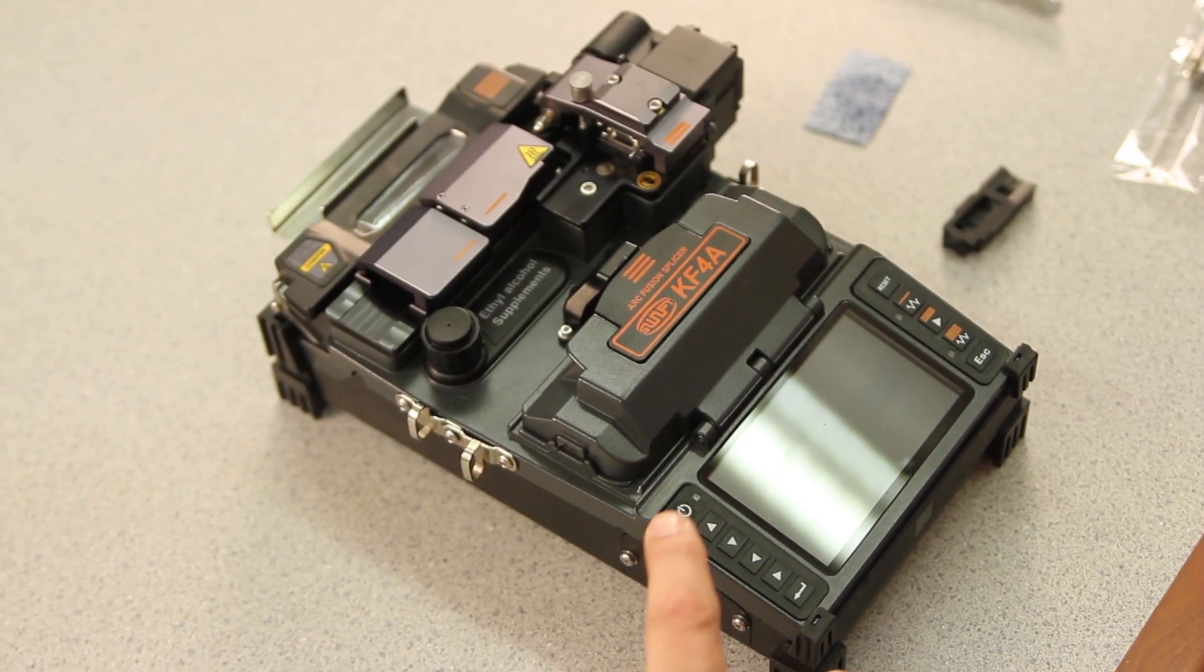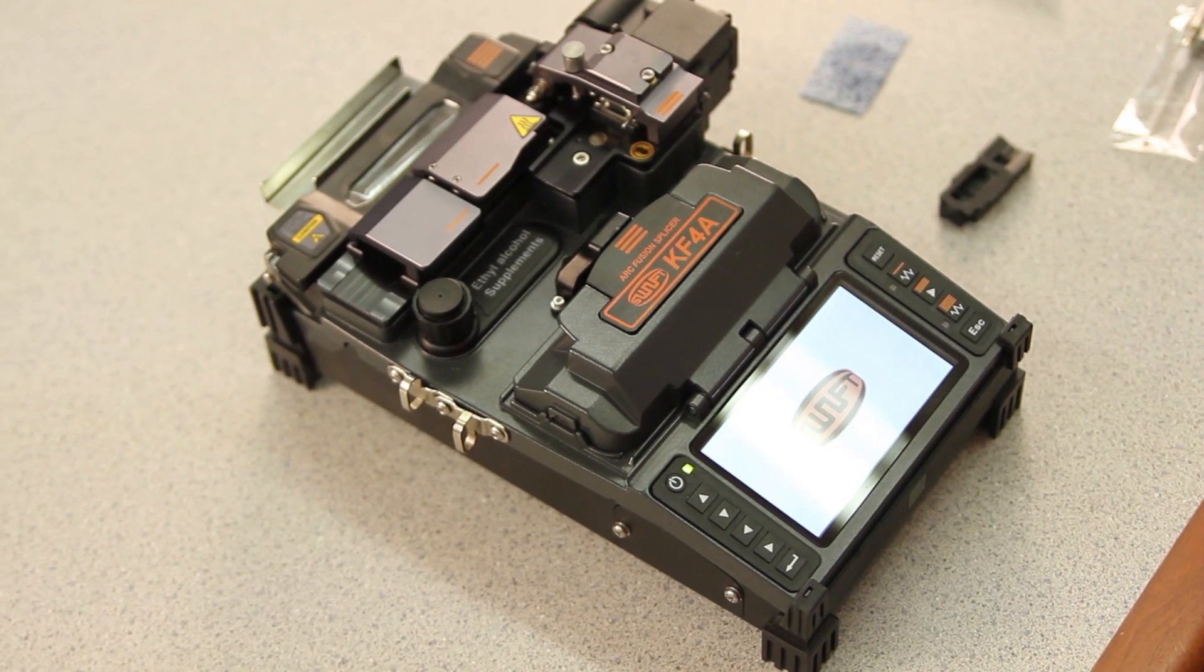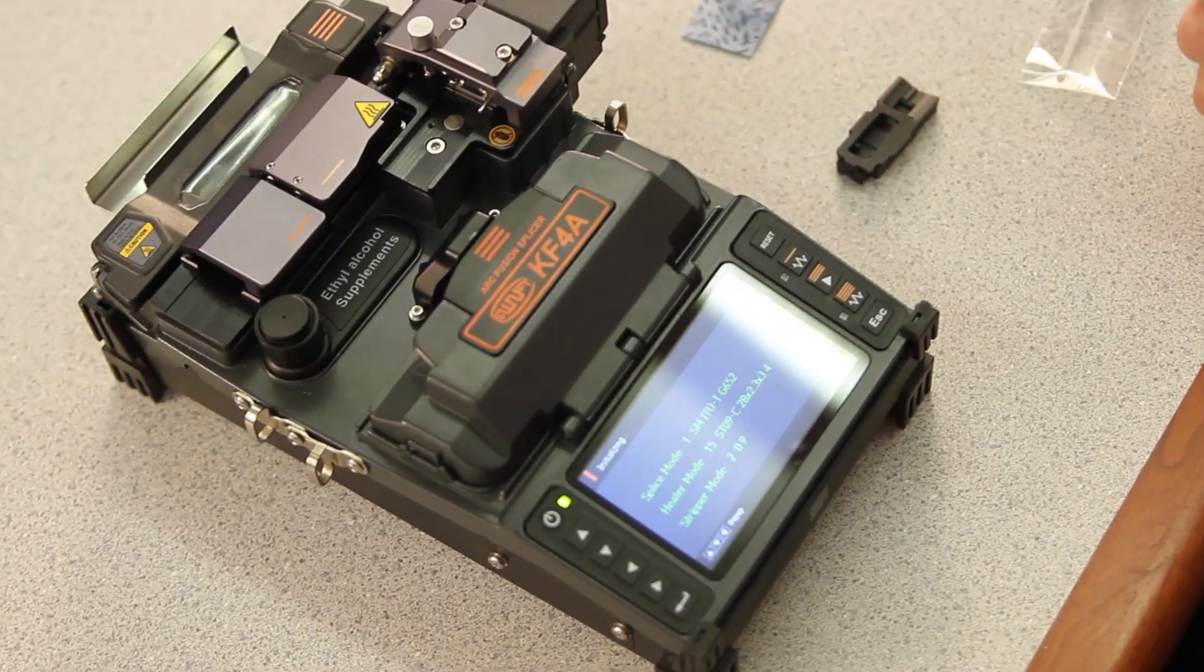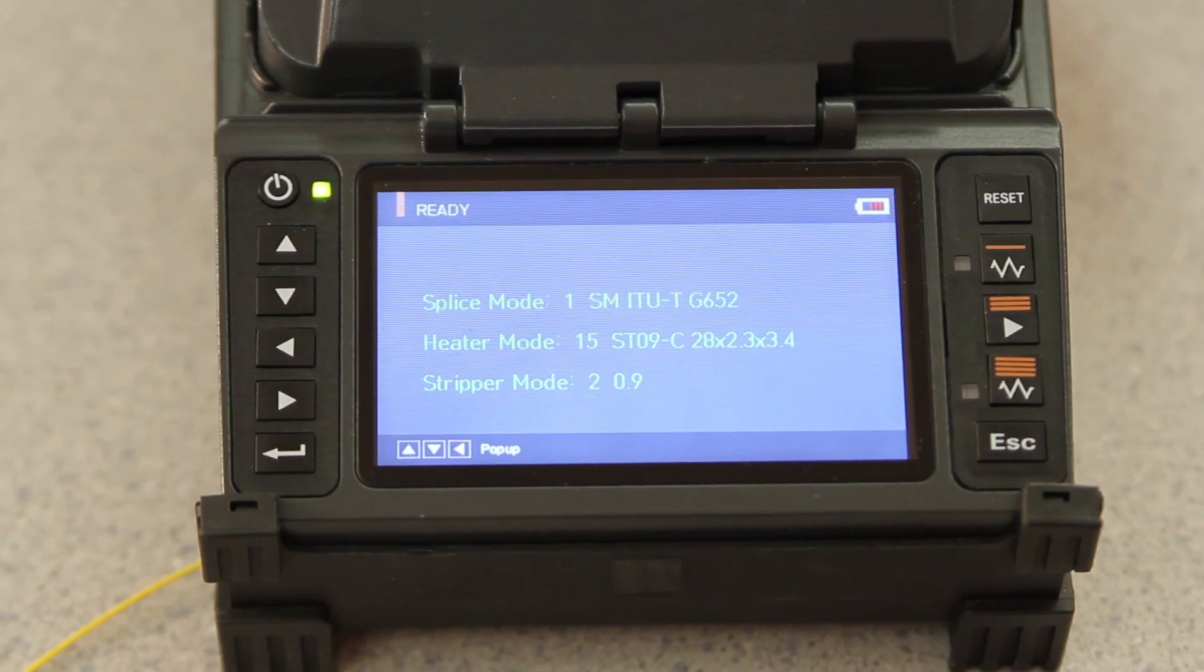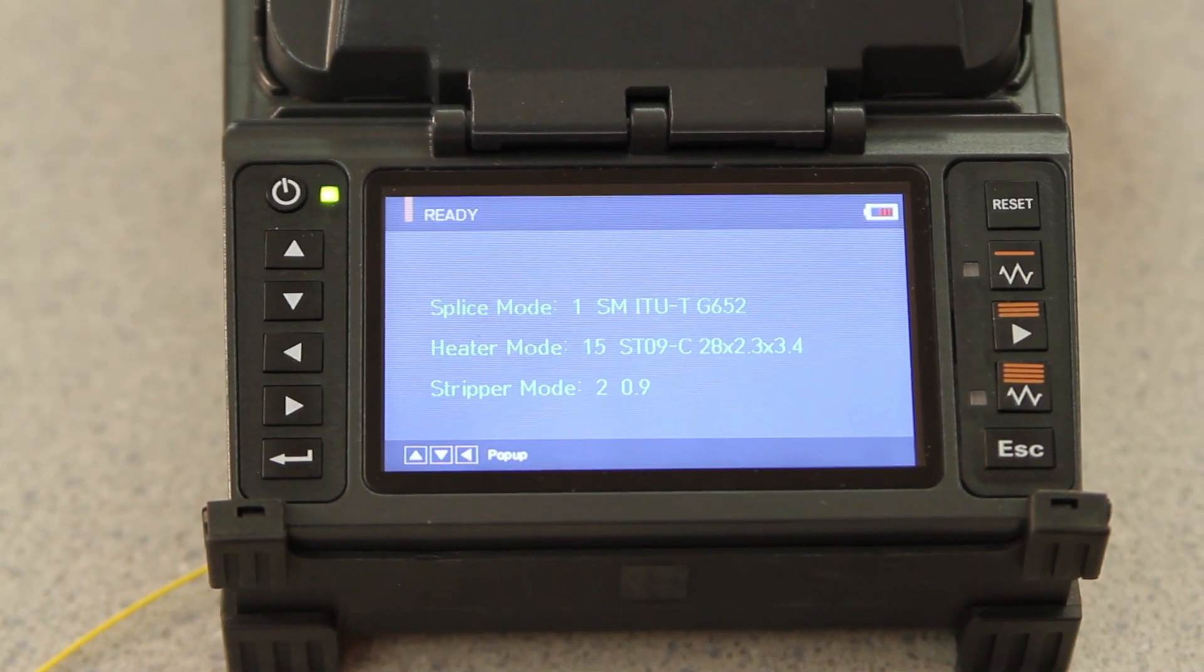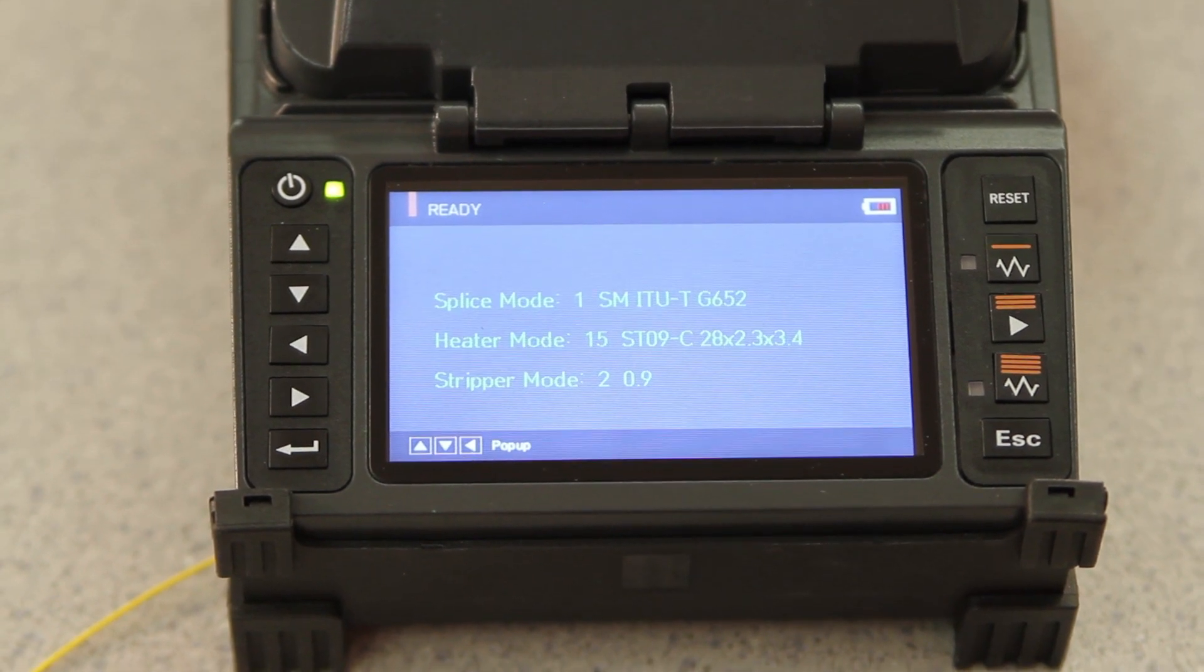First, turn your splicer on. Next, check that your parameters are correct. In this case, I am connectorizing to a single mode fiber SamTom connector utilizing 900 micron, so my settings are correct.